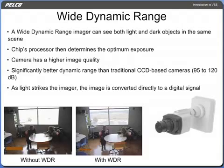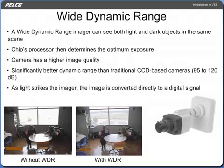The wide dynamic range imager is unique in that as light strikes the imager, the image is converted directly to a digital signal. In other words, the technology digitizes light at the point of capture, in real time. Each pixel determines its own exposure time on an individual basis, instead of each operating at the exposure time demanded by the average brightness of the entire scene — a situation that can result in bright areas being blown out and dark areas being underexposed.